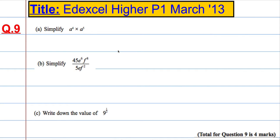Okay, so question 9 is examining the laws of indices. So part A, we're asked to simplify a to the power of 4 times a to the power of 5.